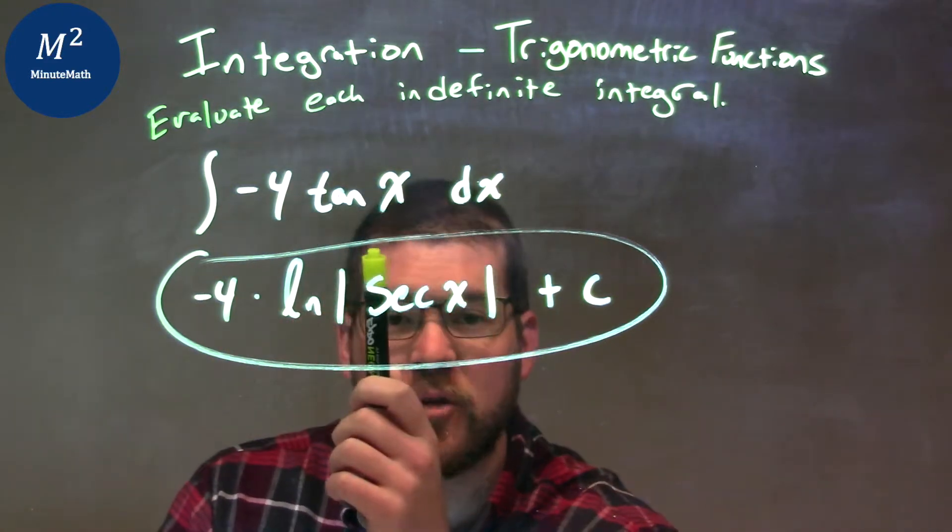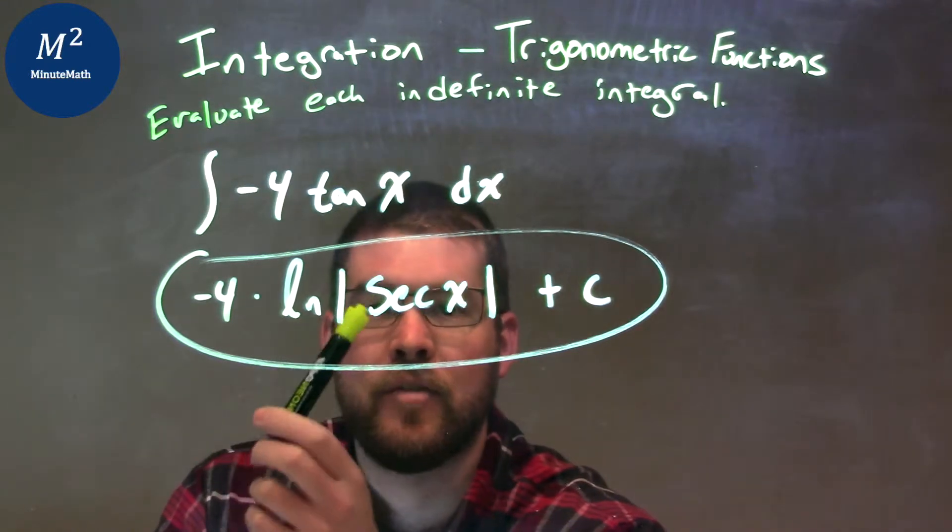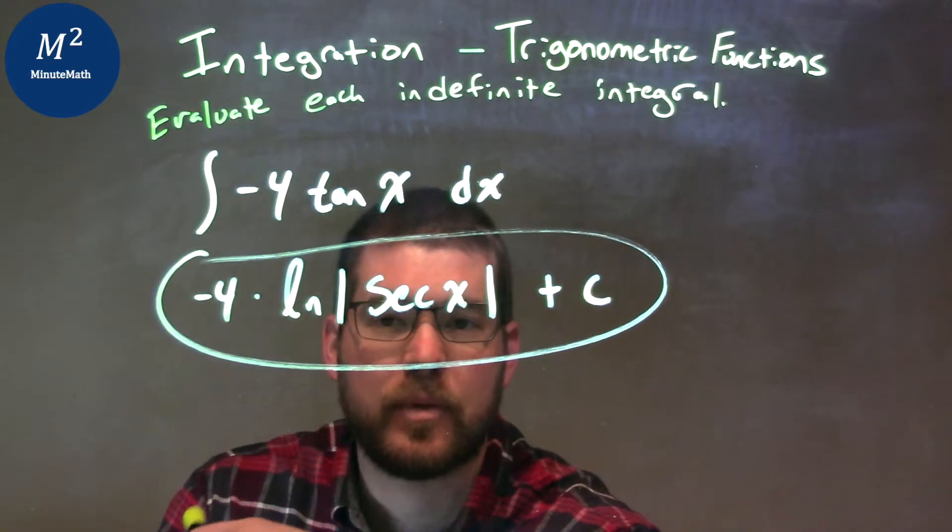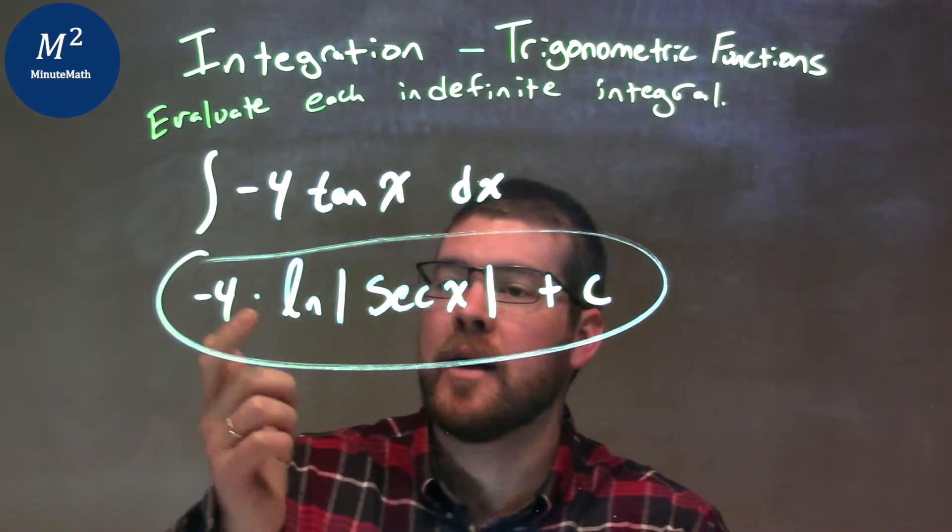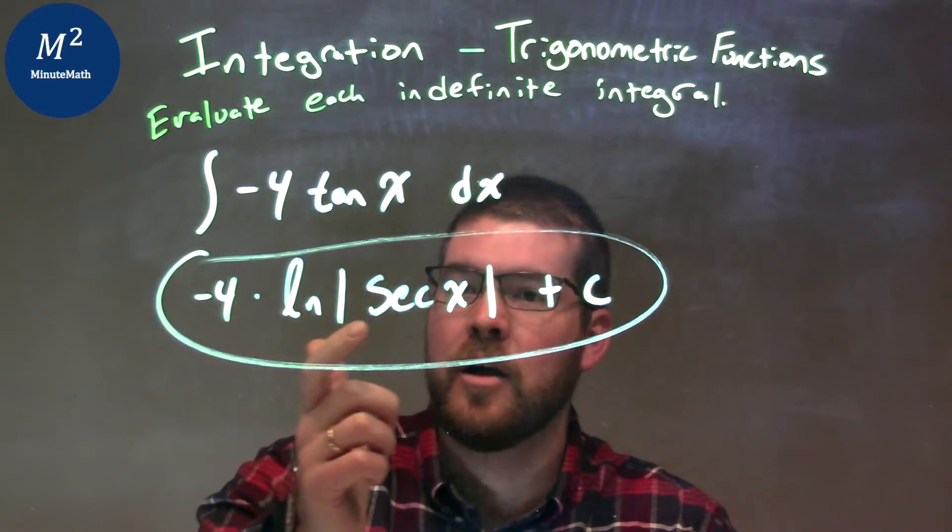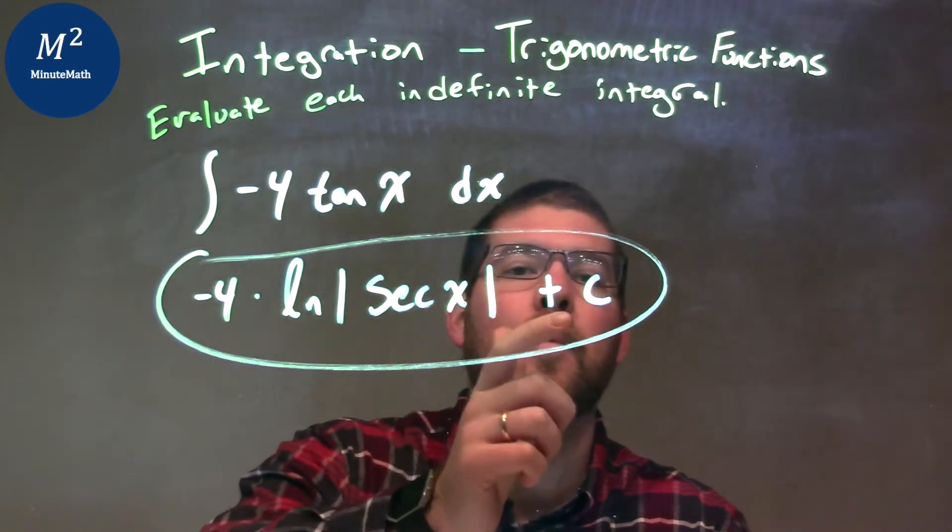But the integral of tangent of x is natural log of the absolute value of secant of x. So, this gives us our final answer here, negative 4 times the natural log of the absolute value of secant of x plus c.